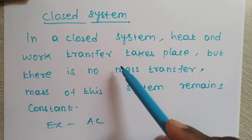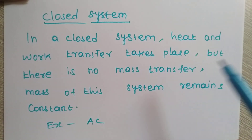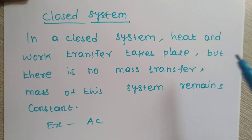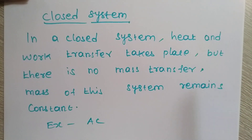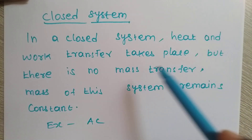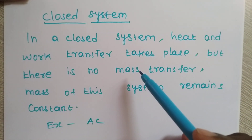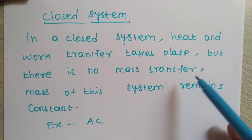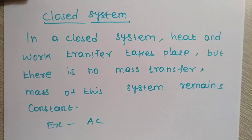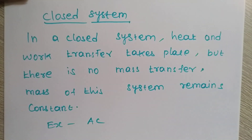What is the work transfer? If you have gas, you will use a compressor. The compressor is used for work transfer in the system. The mass remains constant. For an AC, a fridge, or similar appliances, the refrigerant gas circulates and the mass is constant.